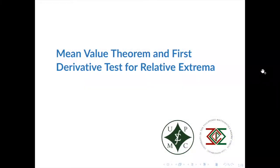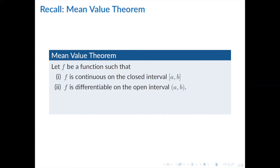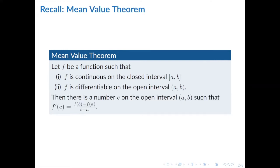Welcome to this Math 21 review video about the mean value theorem and the first derivative test for relative extrema. Let's start by recalling the mean value theorem. It says that if f is a function such that f is continuous on a closed interval from a to b and differentiable on the open interval from a to b, then there's a number c within this open interval such that this equation holds.